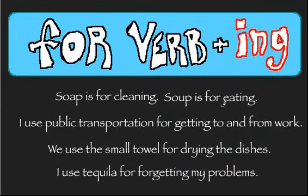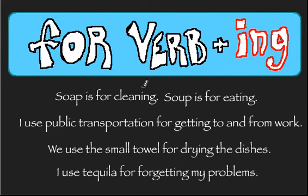The third rule: 'for' plus the verb plus -ing. This is called a gerund — it's when we turn the verb into a noun using -ing. For example: soap is for cleaning, and soup is for eating. Do not confuse these two things — do not clean with soup and eat soap. I use public transportation for getting to and from work. We use the small towel for drying the dishes. And I use tequila for forgetting my problems.